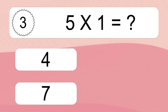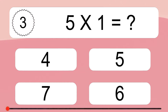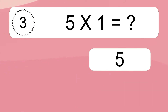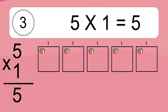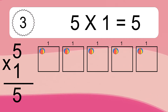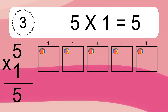5 times 1 equals what? 5 times 1 equals 5. We have 5 boxes, and each box has 1 colorful ball inside. If you count all the balls in all the boxes together, you will have 5 times 1 balls. This equals 5 balls.